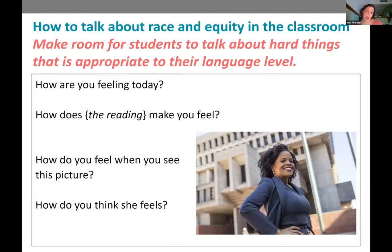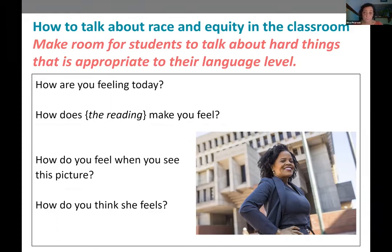Some of these topics can be hard to talk about, especially in lower-level classes, because students might not have the vocabulary for more abstract conversations. This is an example of an activity from a beginning English teacher: every day she teaches students a different word to describe their feelings, with the feelings words getting more complex as the week goes on. Then she uses these words to talk about anything — vaccines, current events, a reading, or pictures. It's a way to discuss complex things with limited vocabulary appropriate to the students' language level.